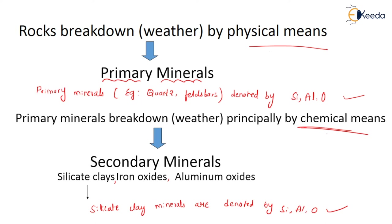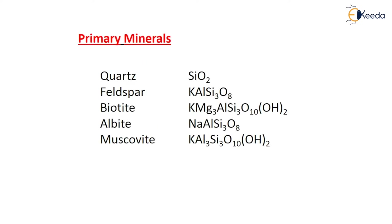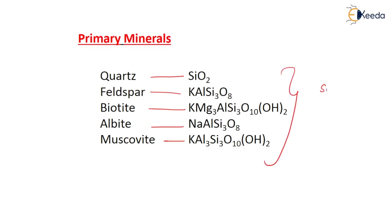What are the examples of primary minerals? Quartz, feldspar, biotite, albite, and muscovite are the examples of primary minerals. The formula of quartz is SiO2 - silica and oxygen. Feldspar contains silica, aluminium and oxygen. Biotite contains potassium, magnesium, aluminium, silica, oxygen and OH (hydroxide). Albite contains sodium, aluminium, silicon and oxygen. Muscovite contains potassium, aluminium, silicon, oxygen and hydroxide. If you observe, every mineral has some amount of Si, Al and oxygen.